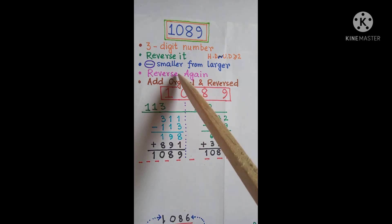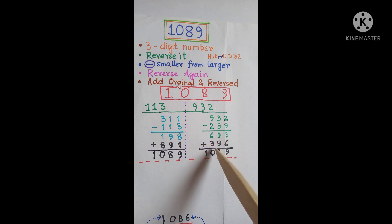Now reverse it. After reversing we will get 396. Next we will add them to get 1089.